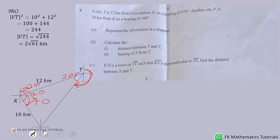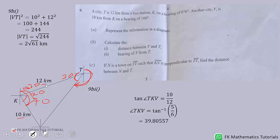So we need to calculate this angle here, angle VKT. Tangent of that angle will be equal to opposite over adjacent. So opposite is this, adjacent is this. So tan inverse of 5 over 6, which is the same as 10 over 12, is 39.80557. So we add this angle to 20 and subtract it from 270 to get a bearing of V from T, which is equal to 210.19 degrees.